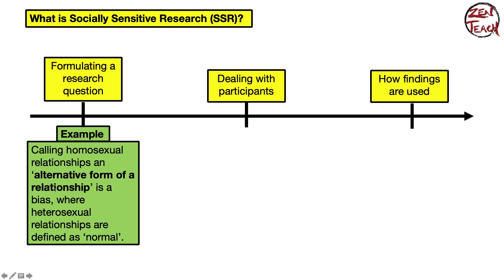Calling homosexual relationships an 'alternative form of relationship' already contains a bias, because it implies that heterosexual relationships are 'normal.' If you ask participants whether they are in a 'normal or alternative relationship,' the phrasing shifts the participant's answer in a way you may not intend. This kind of bias is very hard to detect and easy to make as a researcher.